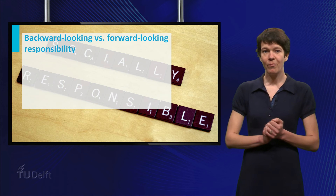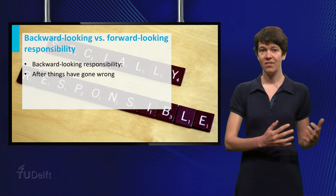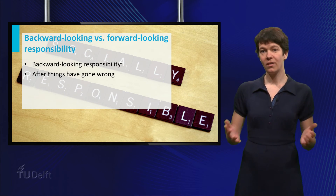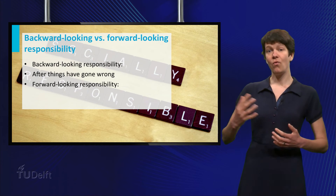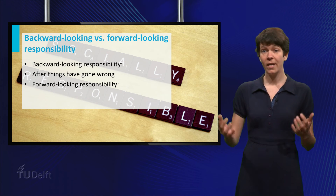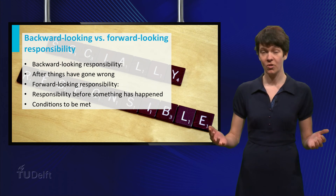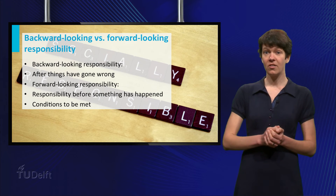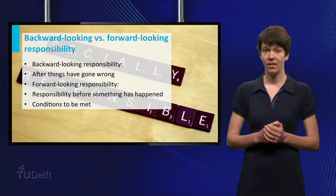The problem of many hands is often discussed in a backward-looking sense — that is, after some negative event has happened. However, we can also use the problem of many hands in a forward-looking sense. We can then use the conditions to see whether the persons are able to carry out or fulfill their responsibility. Does the person have the freedom to act? Does he or she have the required knowledge? Are the right norms in place?